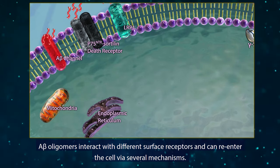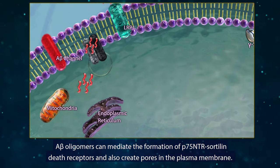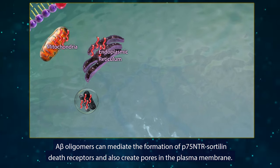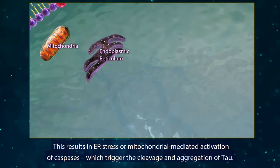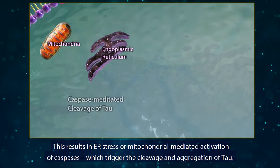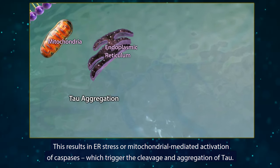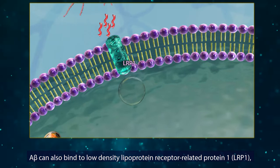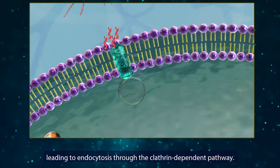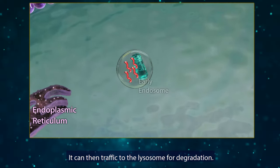Amyloid beta oligomers interact with different surface receptors and can reenter the cell via several mechanisms. They can mediate the formation of P75 NTR sortilin death receptors and also create pores in the plasma membrane. This results in ER stress or mitochondrial-mediated activation of caspases, which triggers the cleavage and aggregation of tau. Amyloid beta can also bind to low-density lipoprotein receptor-related protein 1, leading to endocytosis through the clathrin-dependent pathway, and then traffic to the lysosome for degradation.